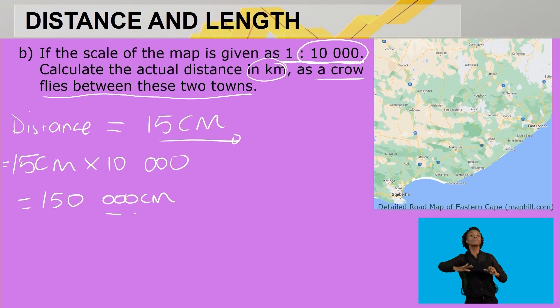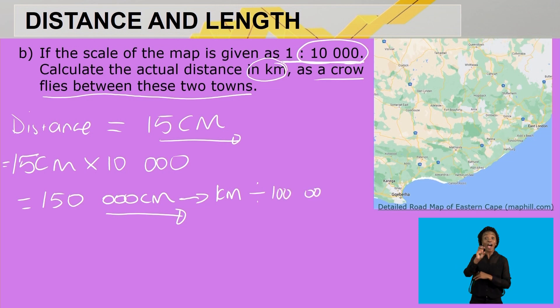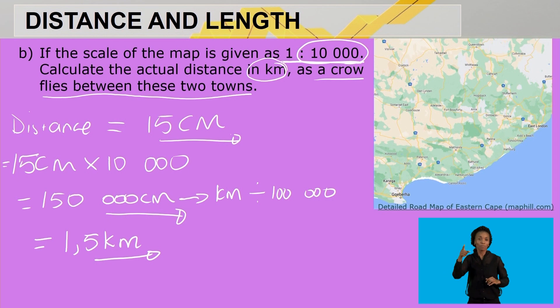We are working on paper, so we need to take this measurement to reality, which is in kilometers. We convert from centimeters to kilometers by dividing by 100,000. Working that out gives us 1.5 kilometers in reality. This means 15 centimeters on paper with the given scale of 10,000 represents 1.5 kilometers in reality. That brings us to the end of our lesson on number and ratio scale. Thank you for joining me — see you next time.